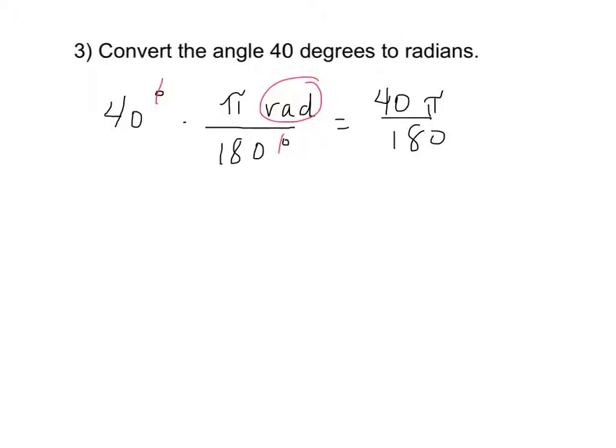A couple things you can do here. Notice the zeros will cancel out, so that's nice. I'll divide the top and bottom by 10. 2 will go into the top and the bottom there, so that'll leave me with 2 there and 9 there.